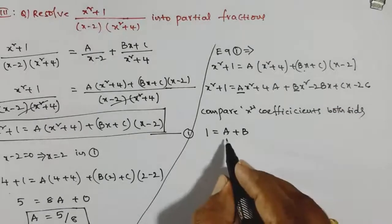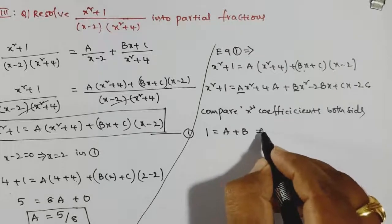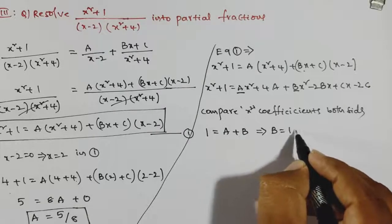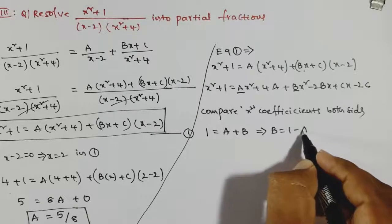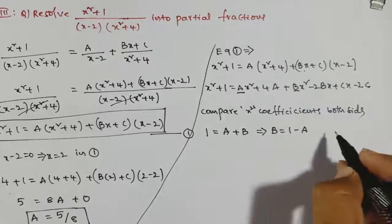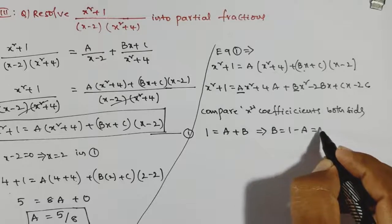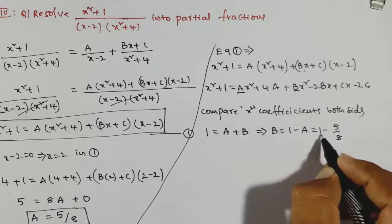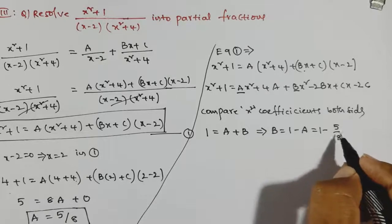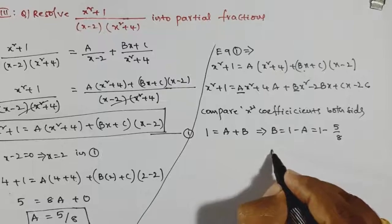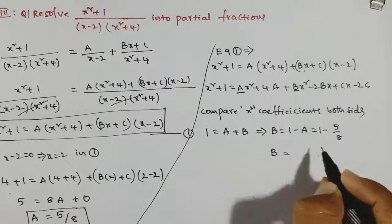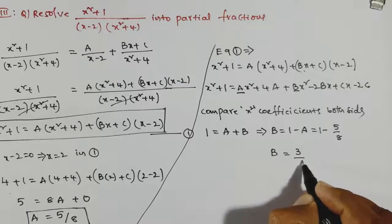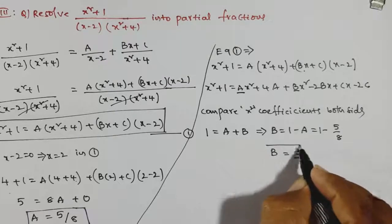We already know the value of A. So B = 1 − A. Substituting A = 5/8, we get B = 1 − 5/8 = (8 − 5)/8 = 3/8. This is the required value of B.